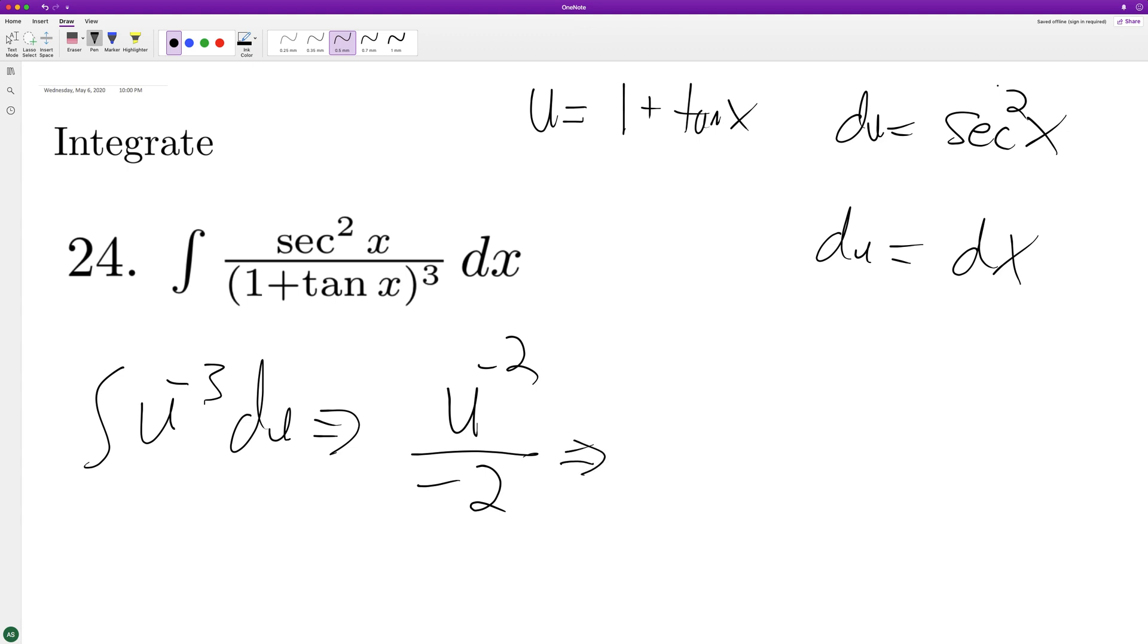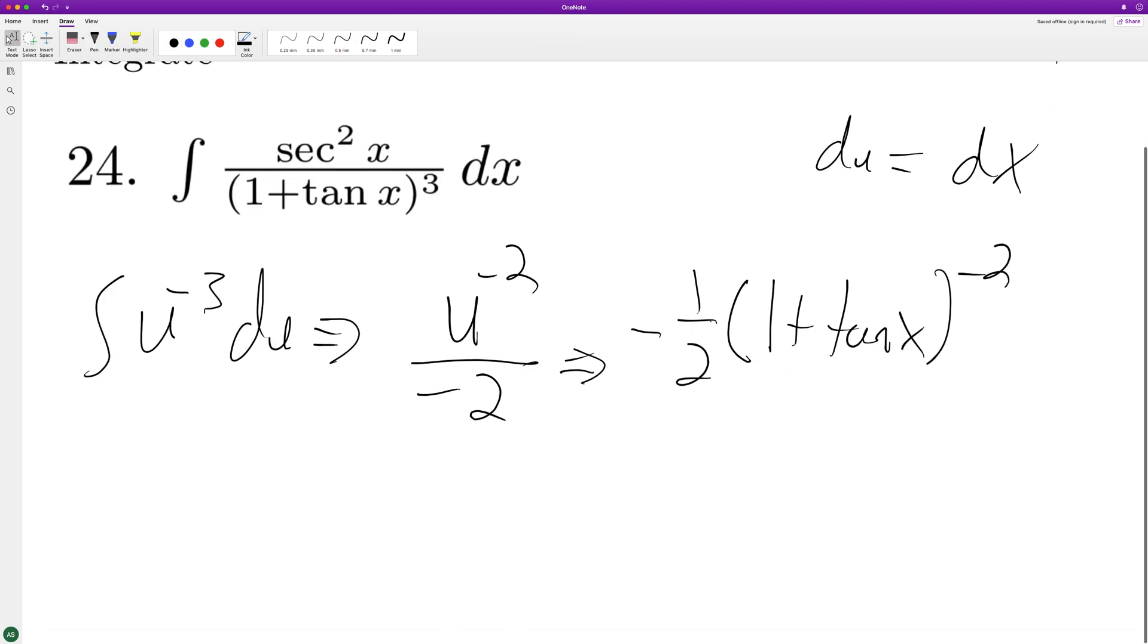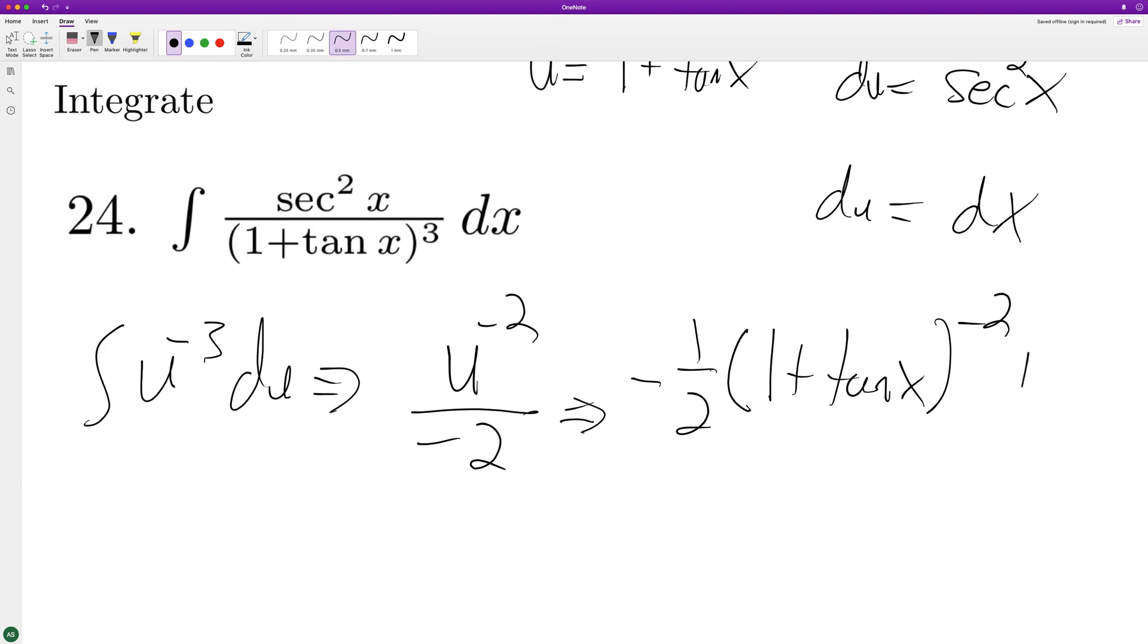So then what we end up with is negative 1 half and then substitute back in 1 plus tangent of x raised to the negative 2. And then we end up with plus c.